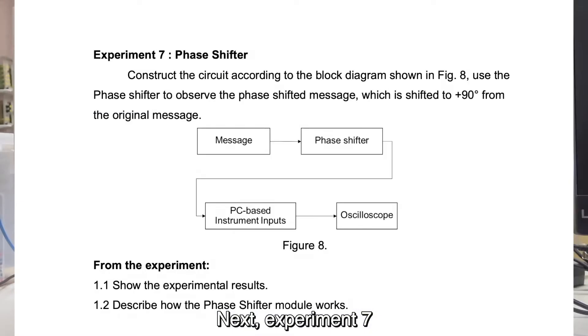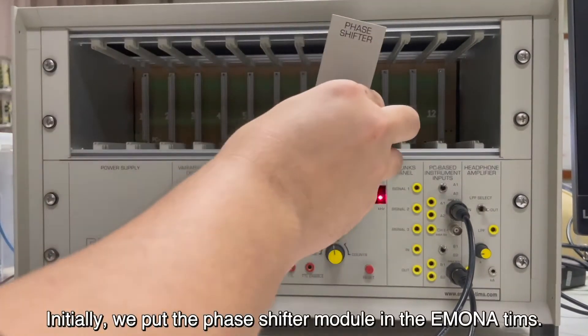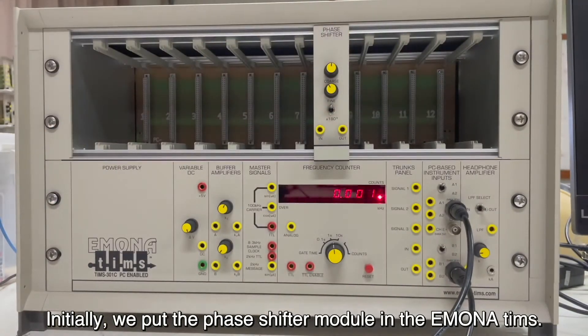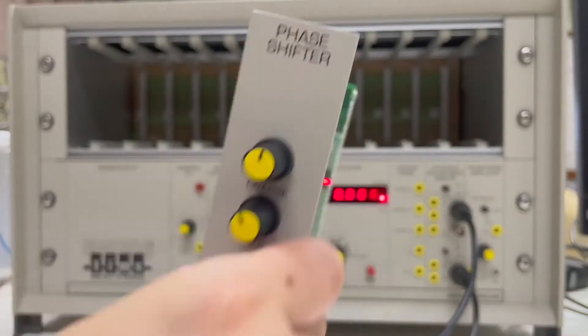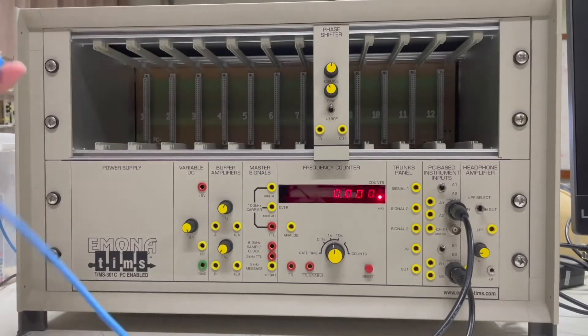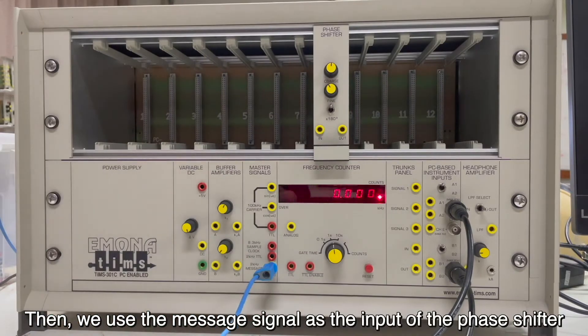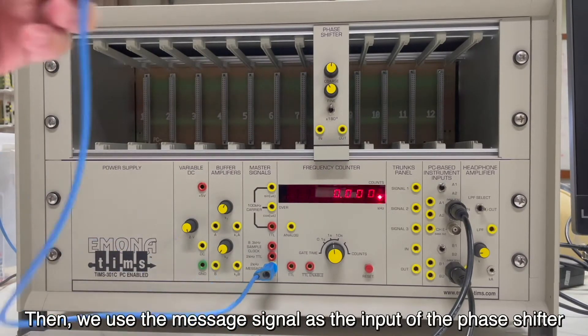Next, Experiment 7. This experiment involves phase shifter. In this theory, we put the phase shifter module in the EMONA TIMS. Then, we use the message signal as the input of the phase shifter.